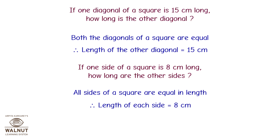If one diagonal of a square is 15 cm long, how long is the other diagonal? Both diagonals of a square are equal, so the other diagonal is also 15 cm. If one side of a square is 8 cm long, how long are the other sides? All sides of a square are equal, so each side is 8 cm.